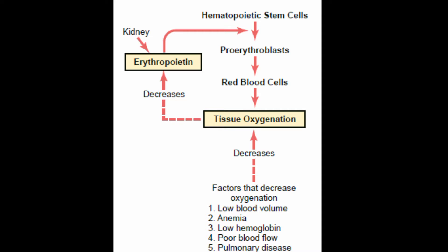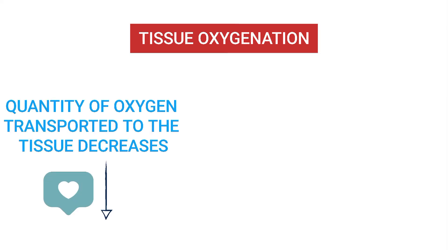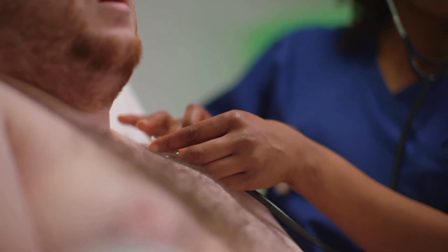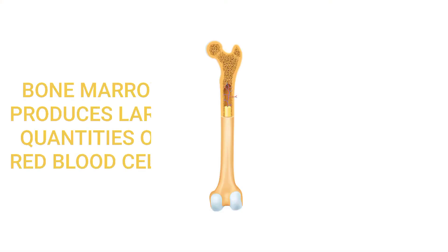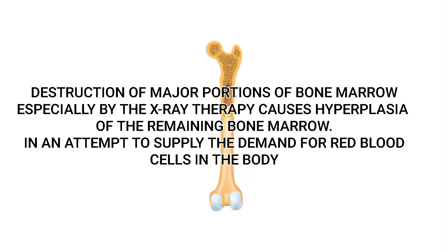Tissue oxygenation is the most essential regulator of red blood cell production. When the quantity of oxygen transported to the tissues decreases, the rate of red blood cell production increases. When a person becomes extremely anemic as a result of hemorrhage or any other condition, the bone marrow begins to produce large quantities of red blood cells.